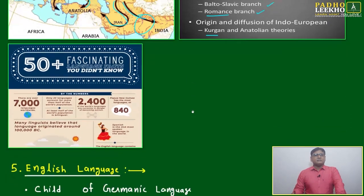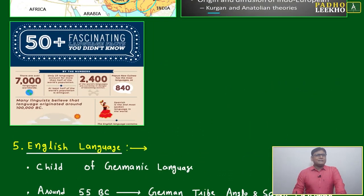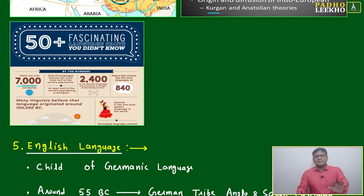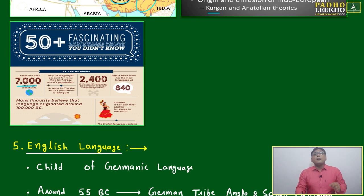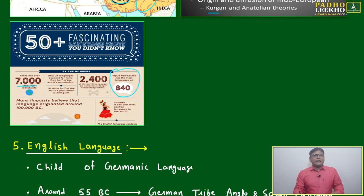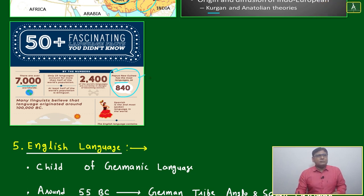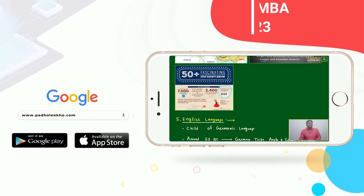Regarding the origin and diffusion of Indo-European, there are many interesting facts. Approximately 7,000 languages with developed scripts are spoken throughout the world. One of the countries with the highest variety of languages is Papua New Guinea — a very small, tiny island where 840 different types of languages are used.